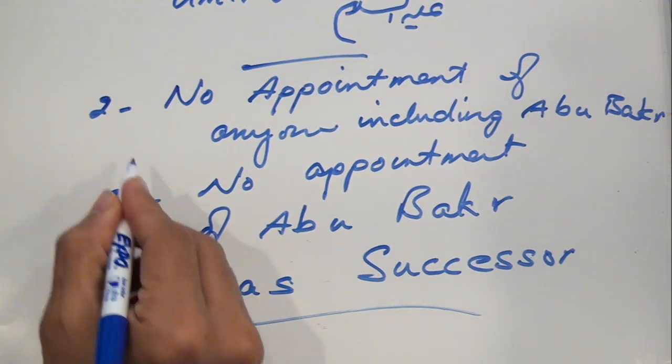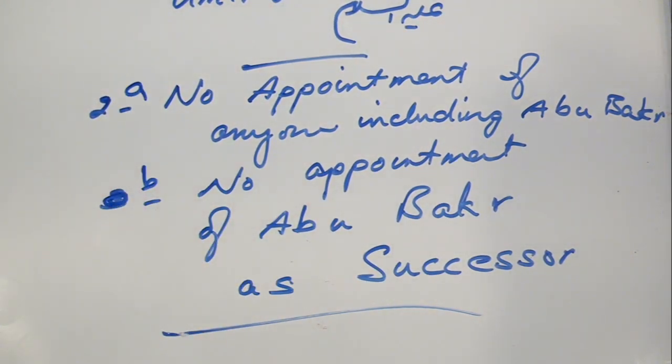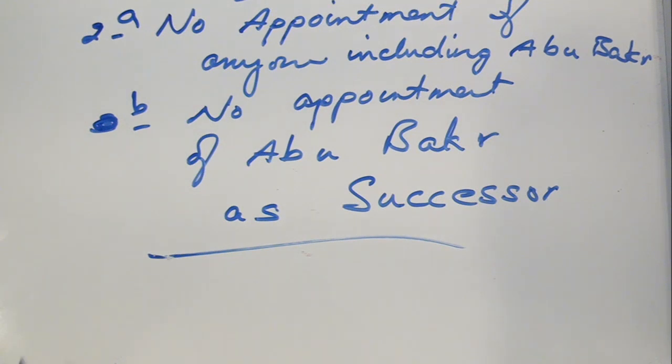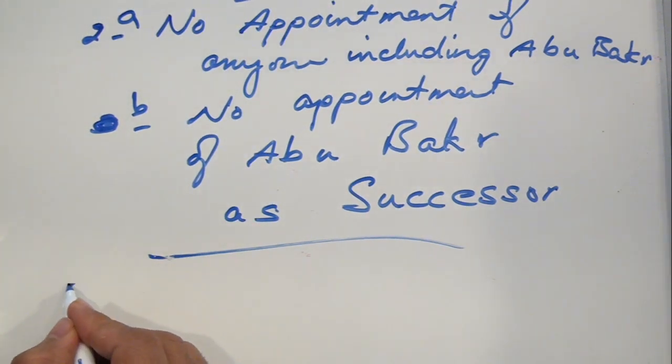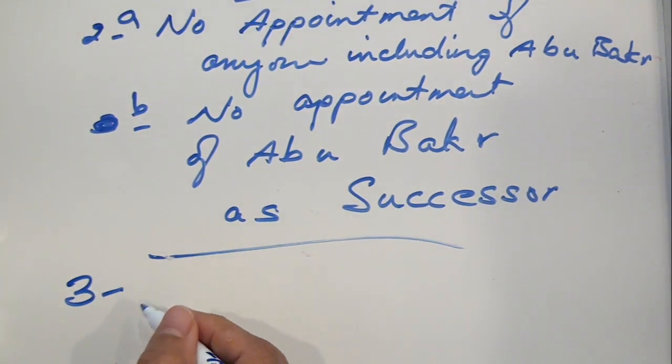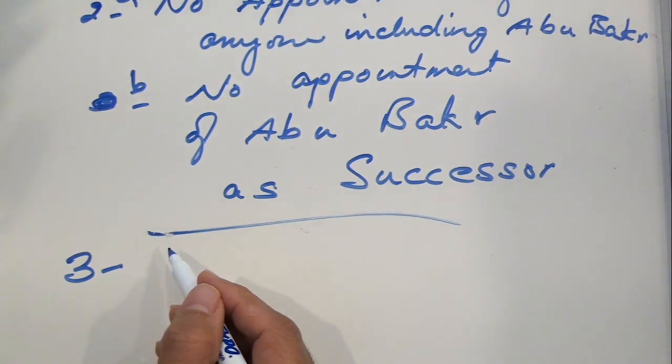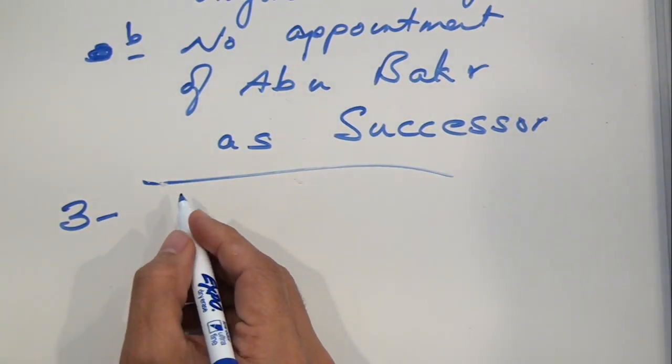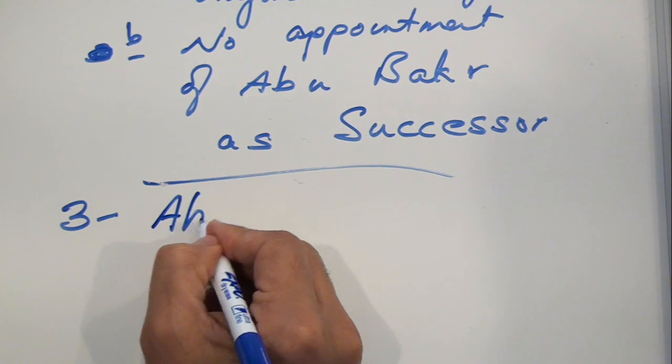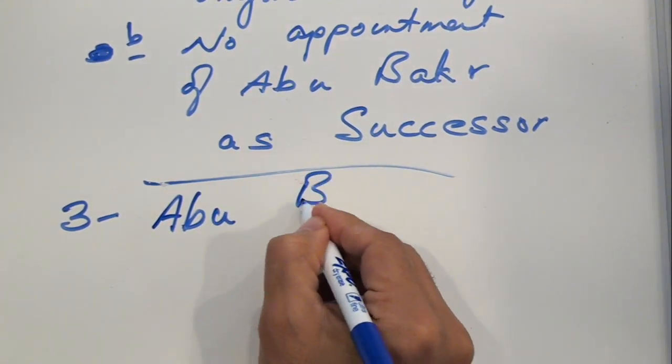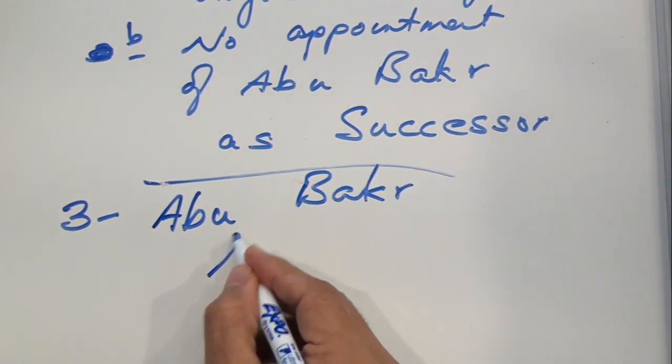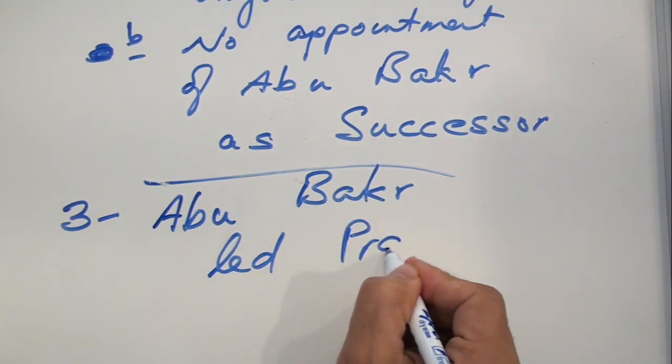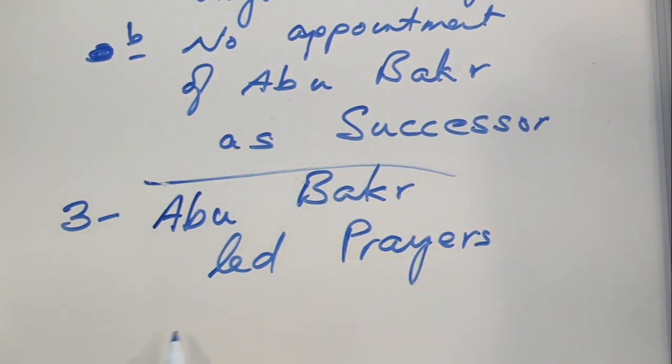So we just make this 2A and 2B, or you could make it number 3. Our assertion number 3, rejection number 3 in regard to this Umari claim is the following: that even if we agree that Abu Bakr, let's say Abu Bakr led prayers, so what? So what?